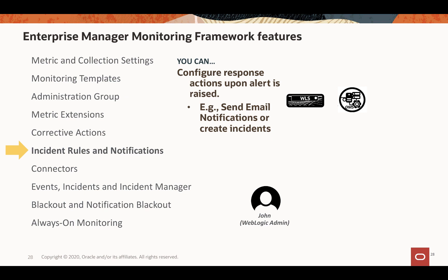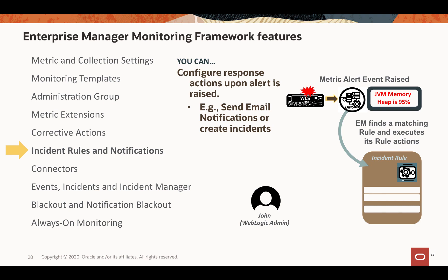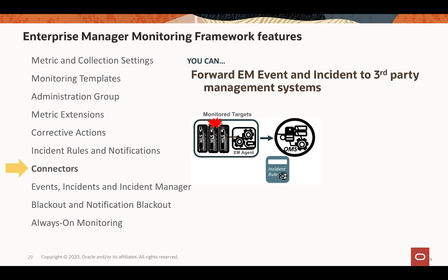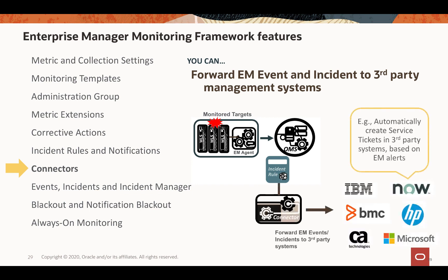Incident rules are a framework that manages response actions when an alert is raised, such as sending email notifications. When a metric threshold is crossed, EM raises a metric alert event. The incident rule engine detects that event and looks up matching rules instructing EM on how to handle it. For example, an incident is created and assigned to the WebLogic administrator, and an email notification is sent to inform them of the issue. You can also forward EM alert information to third-party systems using the connector service — for example, automatically creating service tickets in ServiceNow, BMC, or CA.